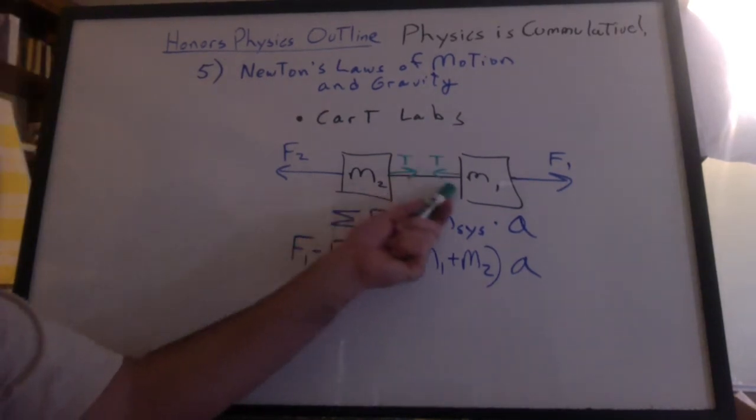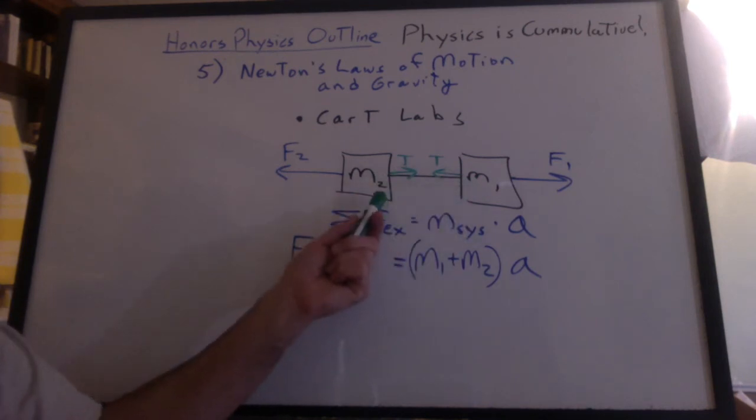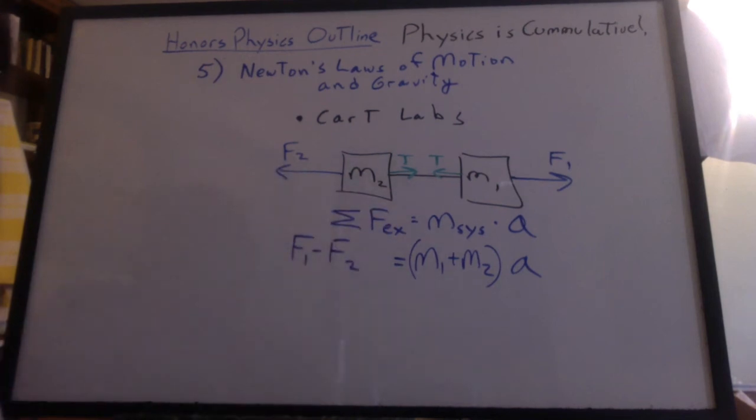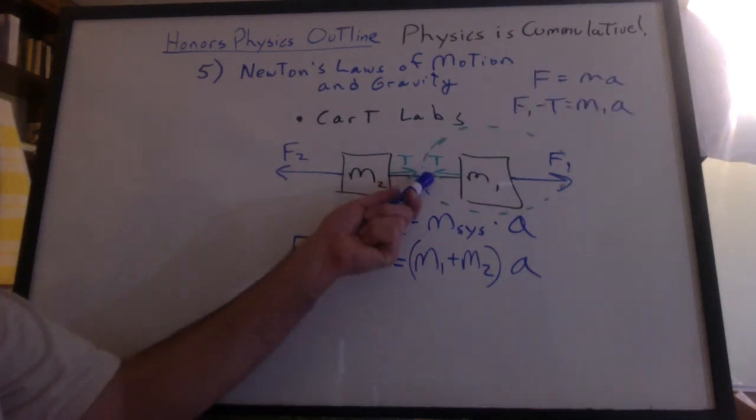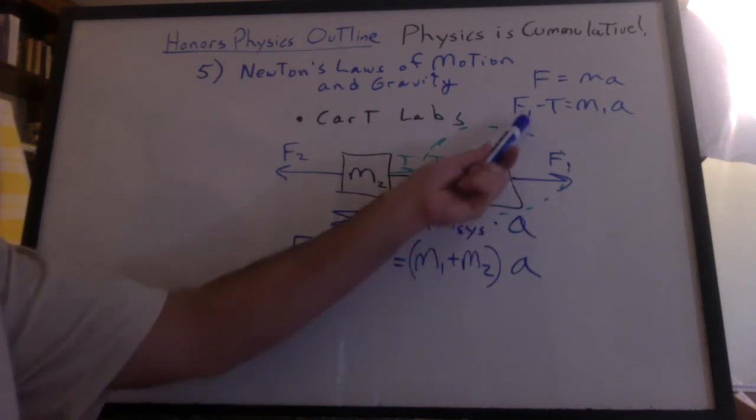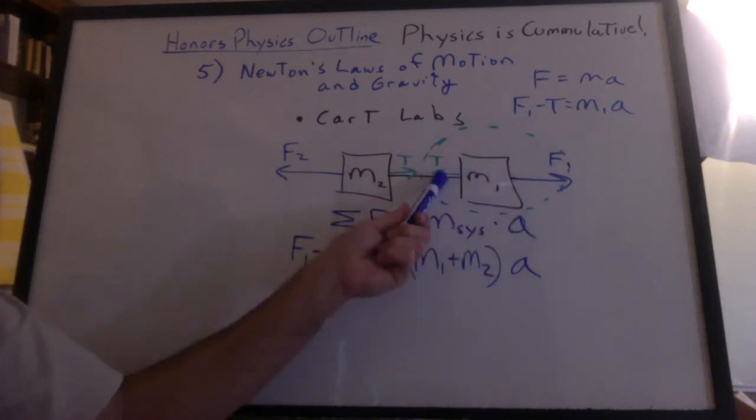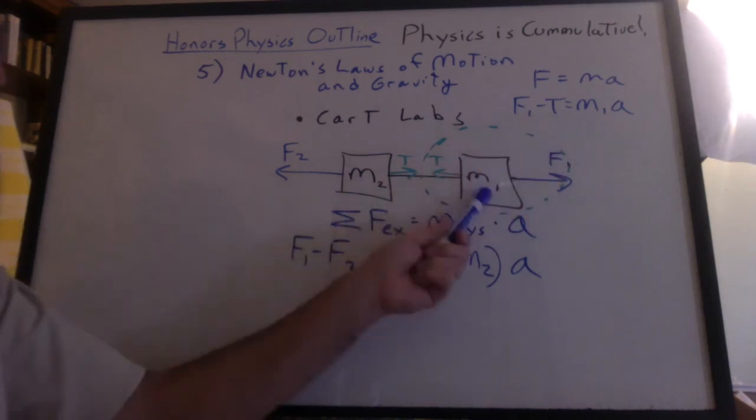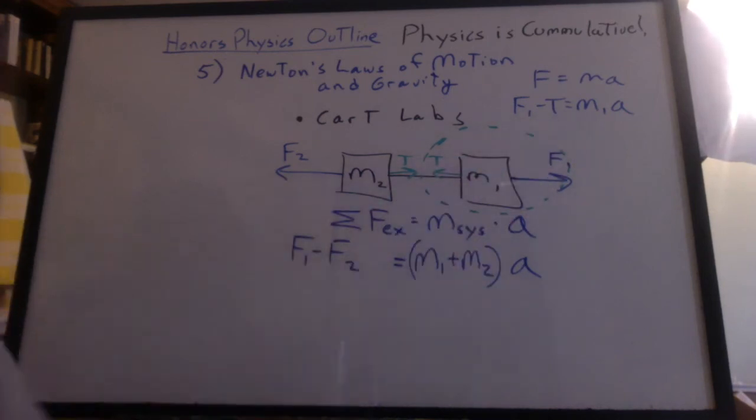Remember, we did not include the internal forces of the tension pulling on each object because they're going to cancel out anyway. So it's just external forces that matter. If you want to find an internal force, then you have to break the system up, isolate this, and then we can say the forces forward minus this force backwards equals just this mass times the acceleration that we previously found.